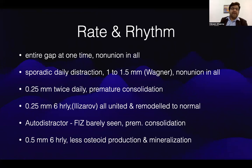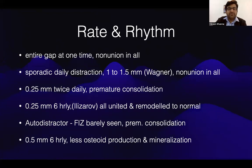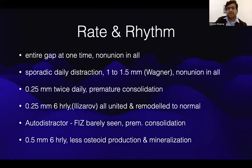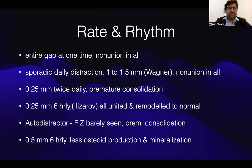There have been many studies to determine the ideal rate and rhythm. Lengthening the entire gap at one time produced non-union in all cases. Sporadic daily distraction of 1 to 1.5 mm also produced non-union in all cases. Distraction of 0.25 mm twice a day led to premature consolidation. Distraction of 0.25 mm six times per day — advocated by Ilizarov — resulted in all regenerates being united and remodeled to normal bone. An autodistractor produces barely visible fibrous interzone and leads to premature consolidation. Distraction of 0.5 mm six times per day produces less osteoid and less mineralization.